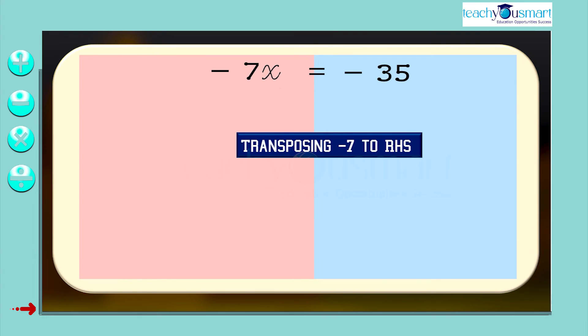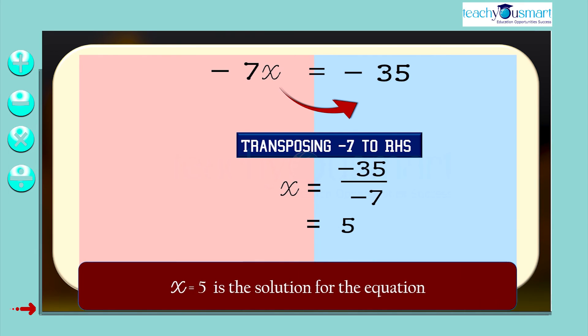Transposing -7 to RHS, we get x = -35/-7 = 5. That is, x = 5 is the solution of equation.